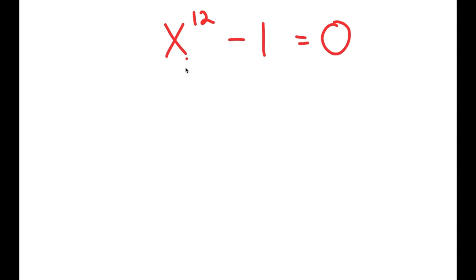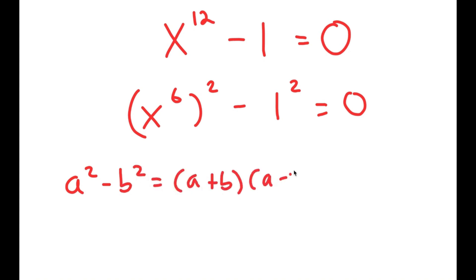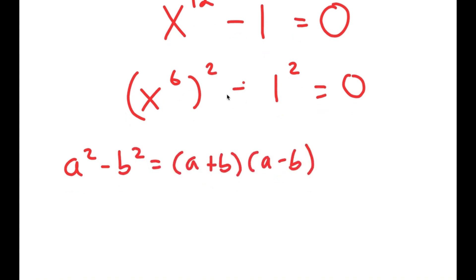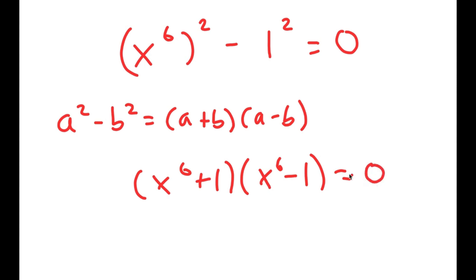To solve this, I'm going to first rewrite this as x to the power of 6, squared, minus 1 squared is equal to 0. The reason I'm doing this is so I can use the property a squared minus b squared is equal to a plus b times a minus b. So this turns into x to the power of 6 plus 1 times x to the power of 6 minus 1 is equal to 0.